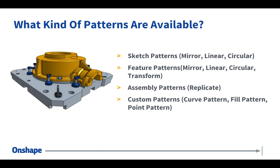I also added transform to the list — it has a unique capability to copy the part and create more instances. At the assembly level, we can pattern parts with Replicate. And the last thing I want to get into are some custom FeatureScript-driven patterns created since FeatureScript was launched. They cover odd scenarios where you might not have a perfectly linear or circular pattern — things like curve patterns, fill patterns for filling a face with a geometric shape, and point patterns for placing parts at sketch points.